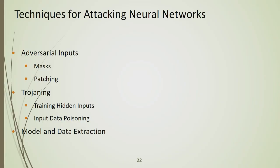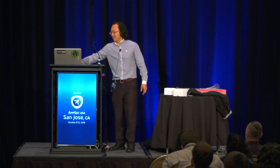Everything we're going to talk about next is built upon understanding that. There are three main areas of attack against neural networks: adversarial inputs (masks and patches), Trojaning (hidden inputs and data poisoning), and model and data extraction — ways for bad guys to steal all those learned weight values without running any of the training themselves.